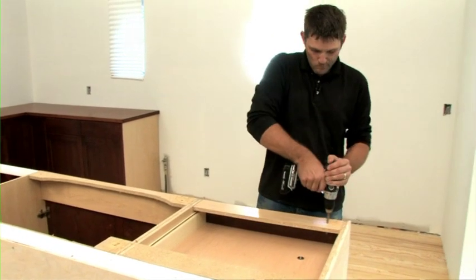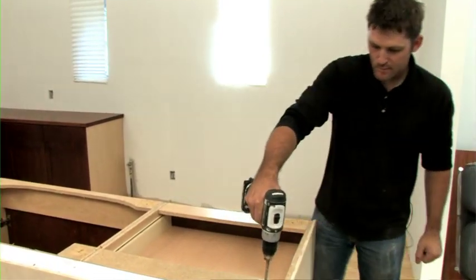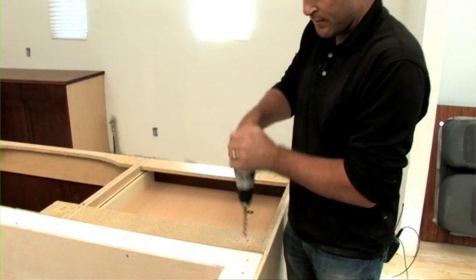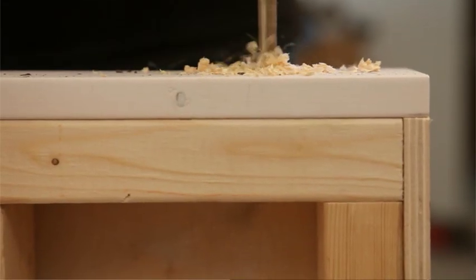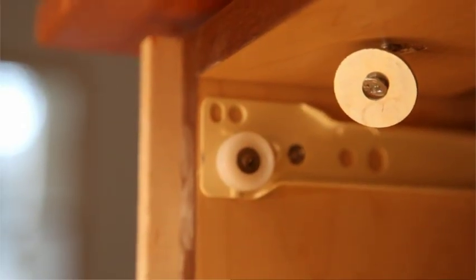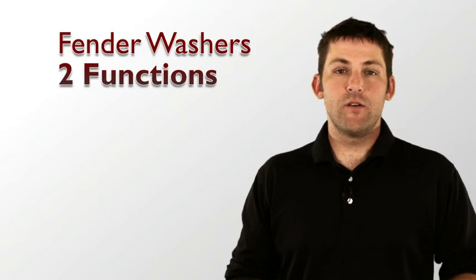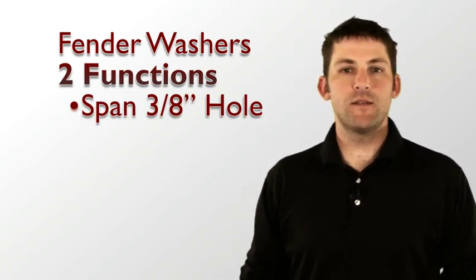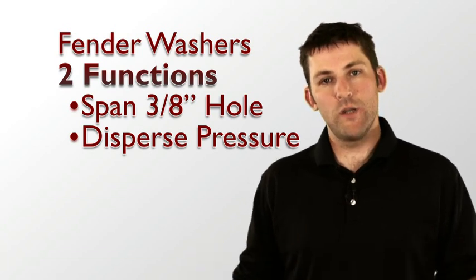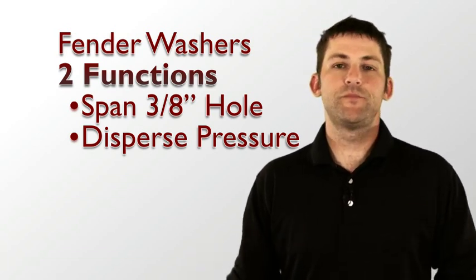To do this, you do need to drill a larger hole and some sort of support in the cabinet itself. You'll notice a 3/8 of an inch hole is larger than a screw. This is where your fender washers come into play. Fender washers provide two different functions. The first, they span the 3/8 hole. The second, they disperse the pressure between the wood and the screw itself.